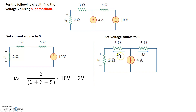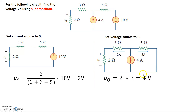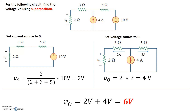The total current going through the 2 ohm resistor is 2 amps. With 2 ohms of resistance and 2 amps of current, the voltage V0 equals 2 times 2, which is 4 volts. That's the voltage across the 2 ohm resistor due to the 4 amp current source alone. The 10 volt source contributed 2 volts. By superposition, the total voltage is 2 volts plus 4 volts equals 6 volts. That's how you find the voltage across V0 using the superposition principle.